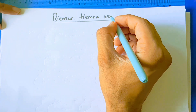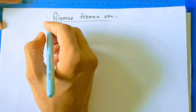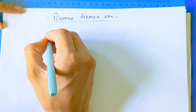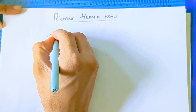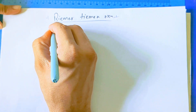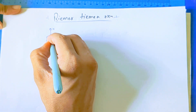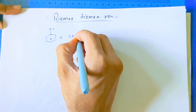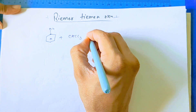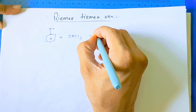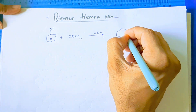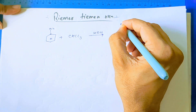Hello everyone, I am Subham and in today's lecture I will discuss about the Reimer-Tiemann reaction. Let's start. First, let's see a simple reaction: phenol with chloroform in the presence of base gives us salicylaldehyde.